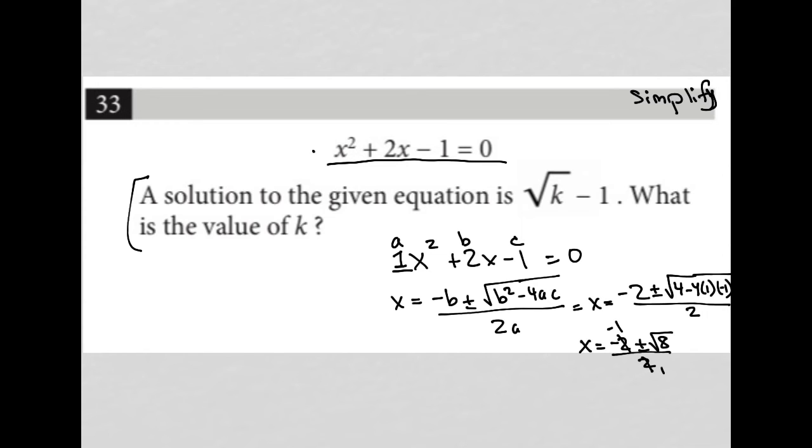Actually, this is 2 root 2. Square root of 8 is the same as 2 root 2, so this becomes 1 as well. I'd have x equals negative 1 plus or minus square root of 2. That would be my two solutions.